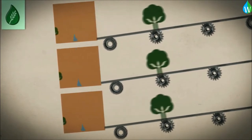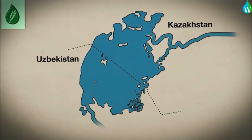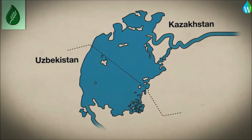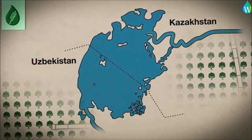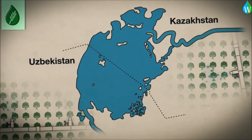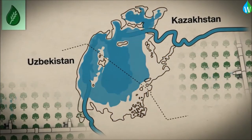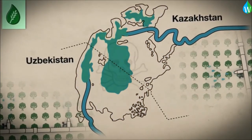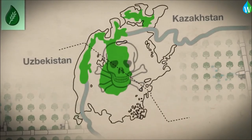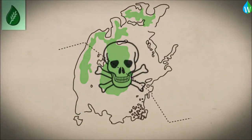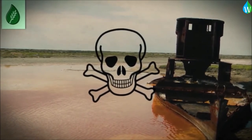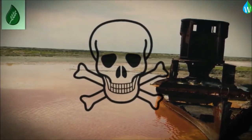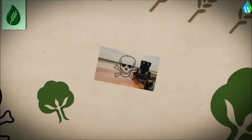The Aral Sea was once the fourth largest freshwater lake worldwide. Kazakhstan and Uzbekistan then started to take huge amounts of water from its tributary rivers in order to irrigate their cotton fields. Since the 1960s, the Aral Sea has shrunk by nearly 75%, losing 90% of its water and becoming very salty due to low water exchange. The remaining water is contaminated by pesticides from cotton farms. The destruction of the Aral Sea is considered one of the largest man-made disasters in the world.